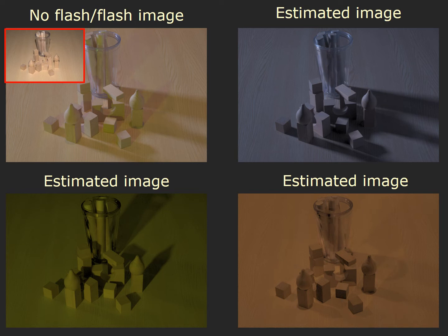Here are more results on three-light separation. Similarly, we image the scene under the same lighting setup. Note that the scene exhibits complex scene geometry, as well as intricate interactions of objects and light rays. Our technique is still able to capture the shadow variations shown here, indicating the robustness and effectiveness of our method.